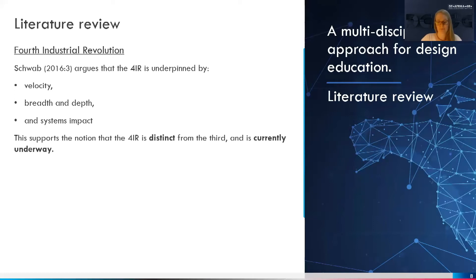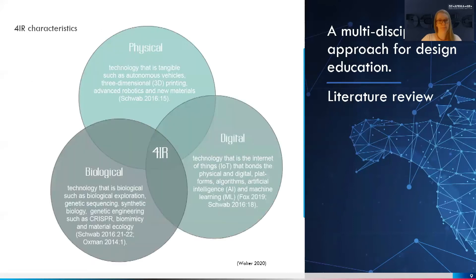The breadth and depth of the 4IR is an expansion from the digital revolution, or the third industrial revolution. It merges several technologies, forming a unique paradigm shift in individualism, our society, the way businesses run, and how economies will function. The systems impact of the 4IR is the transformation of whole systems, which influences individuals, societies, industries, companies, and countries as a whole. The velocity, breadth and depth, and systems impact is an underpinning framework that supports the notion that the 4IR is distinct and currently underway. The 4IR characterizes the amalgamation of the physical, digital, and biological fears, which are the technology drivers of this paradigm shift, and these set the 4IR apart from previous revolutions.